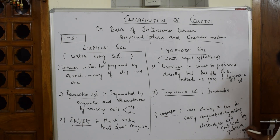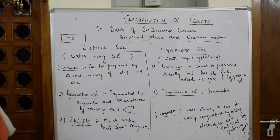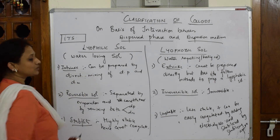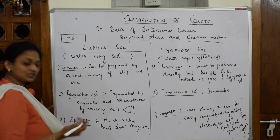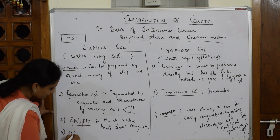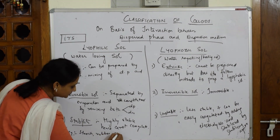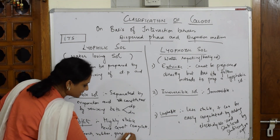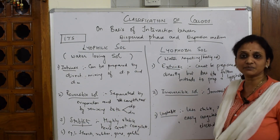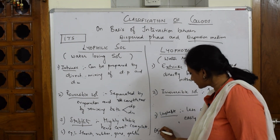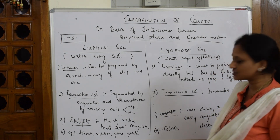The fourth point is examples. For lyophilic sols, the examples are: starch, rubber, gums, and gelatin. For lyophobic sols, the best example — which you have done in the lab — is ferric hydroxide.